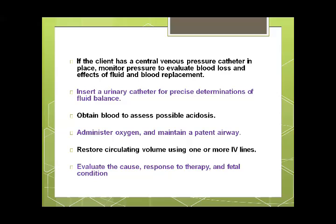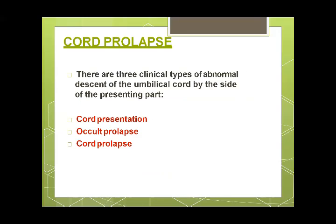The next obstetrical emergency is cord prolapse. This is an emergency which has a more acute, drastic, or fatal effect for the fetus — and for the mother less so. Unlike the previous two emergencies which were fatal for both mother and fetus, cord prolapse can prove fatal for the fetus, and maternal morbidity increases only if operative intervention is required. There are three types: cord presentation, cord prolapse, and occult cord prolapse.